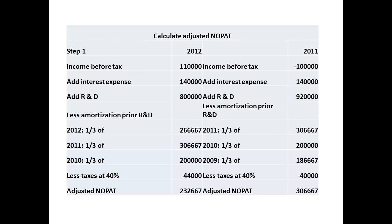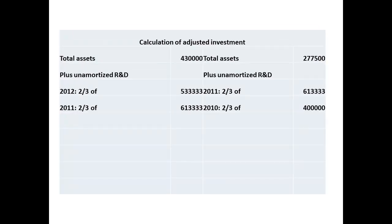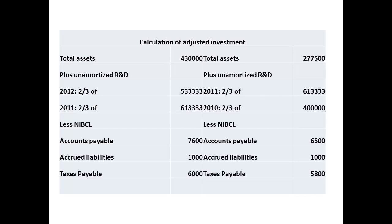Let us be clear about what is happening here. Why add back interest? To prevent double counting — interest is already included in the calculation for cost of capital. Why are we adding back R&D? Because we are treating it as an intangible asset. The second stage will be to determine the figures for the adjusted investment. There are two steps here. The first is to add in the un-amortized figures for research and development. Then, subtract the figures for non-interest-bearing current liabilities. In this case, these are for accounts payable, accrued liabilities, and taxes payable. We now have the figures we need for the adjusted investment.